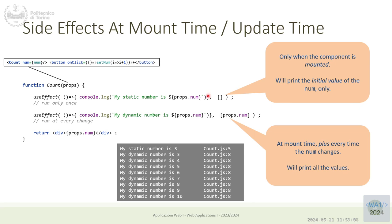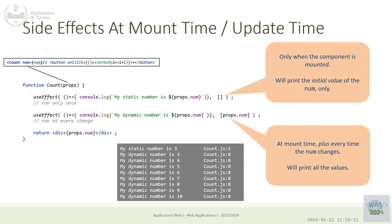We see that both effects print the value of the number, but the first effect is only called once — it's printed only once. The second one is printed many times, every time the 'num' property has changed, so you never see it printed twice with the same value. If the component is re-rendered for any other reason, this effect is not executed. If re-rendered because 'number' changes, then the callback is called again.